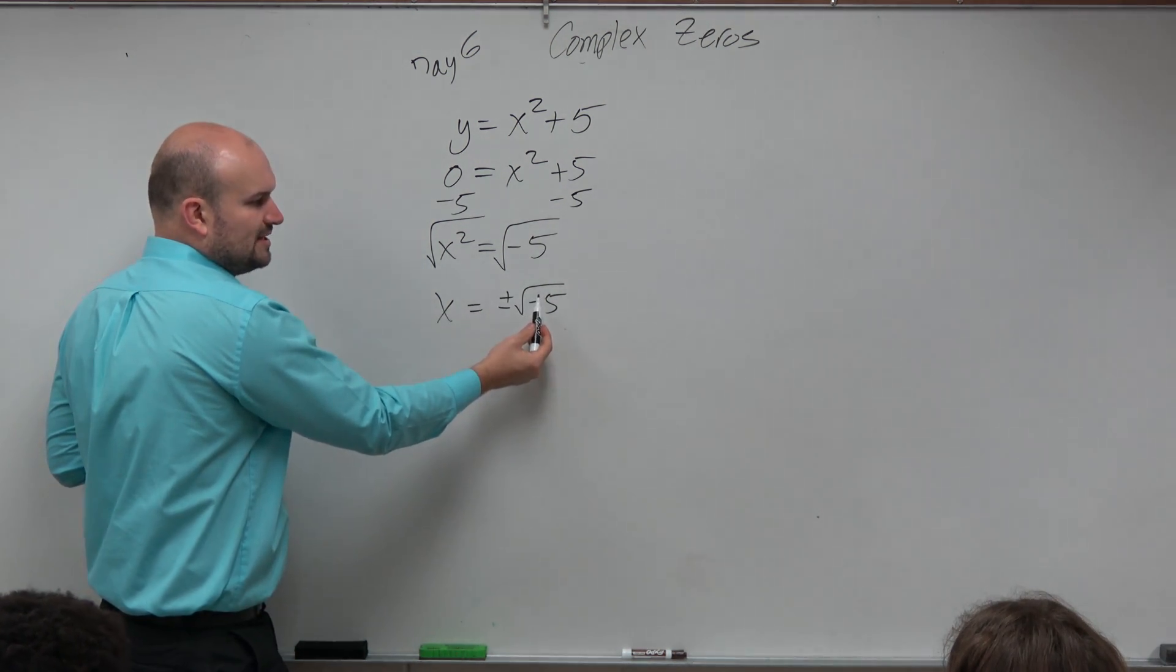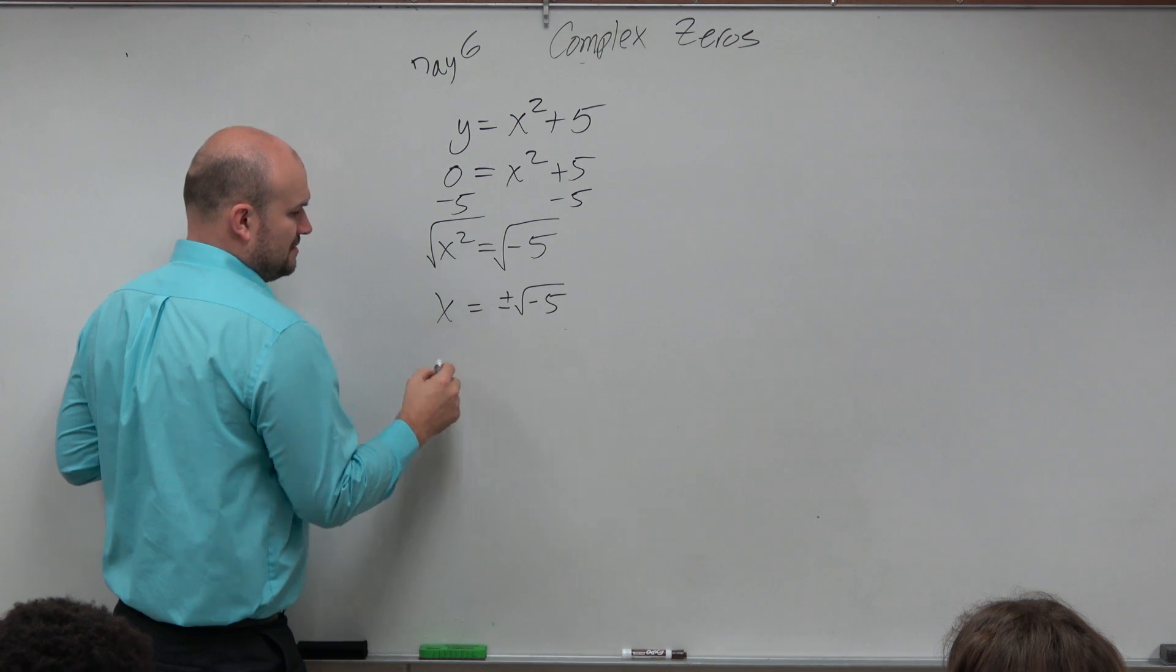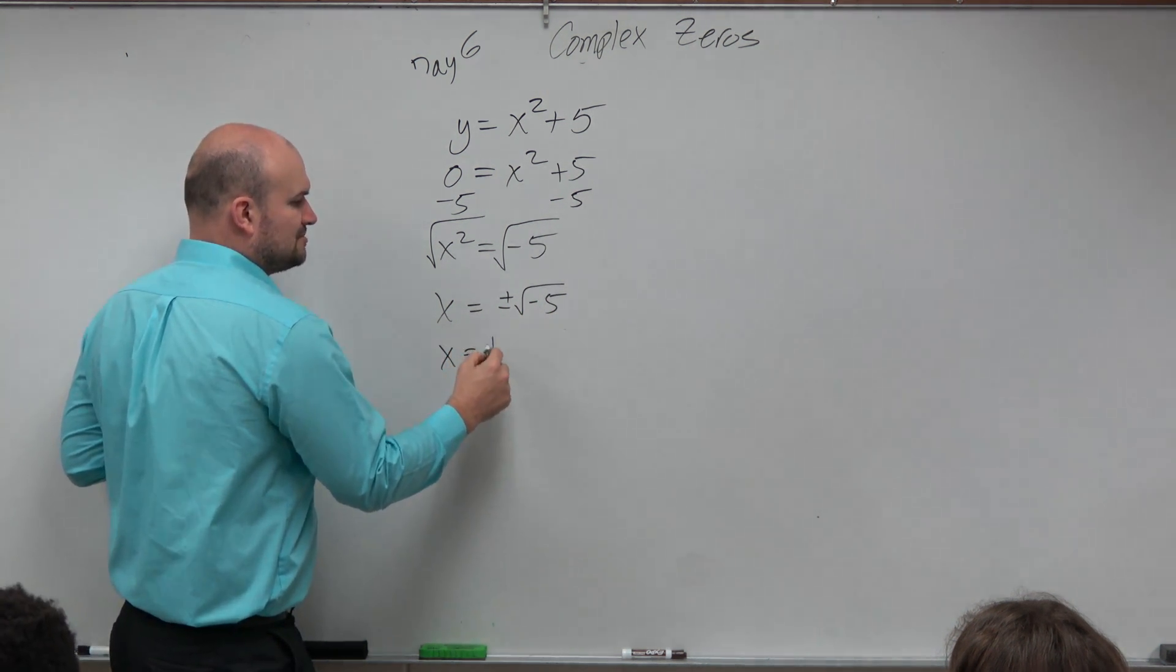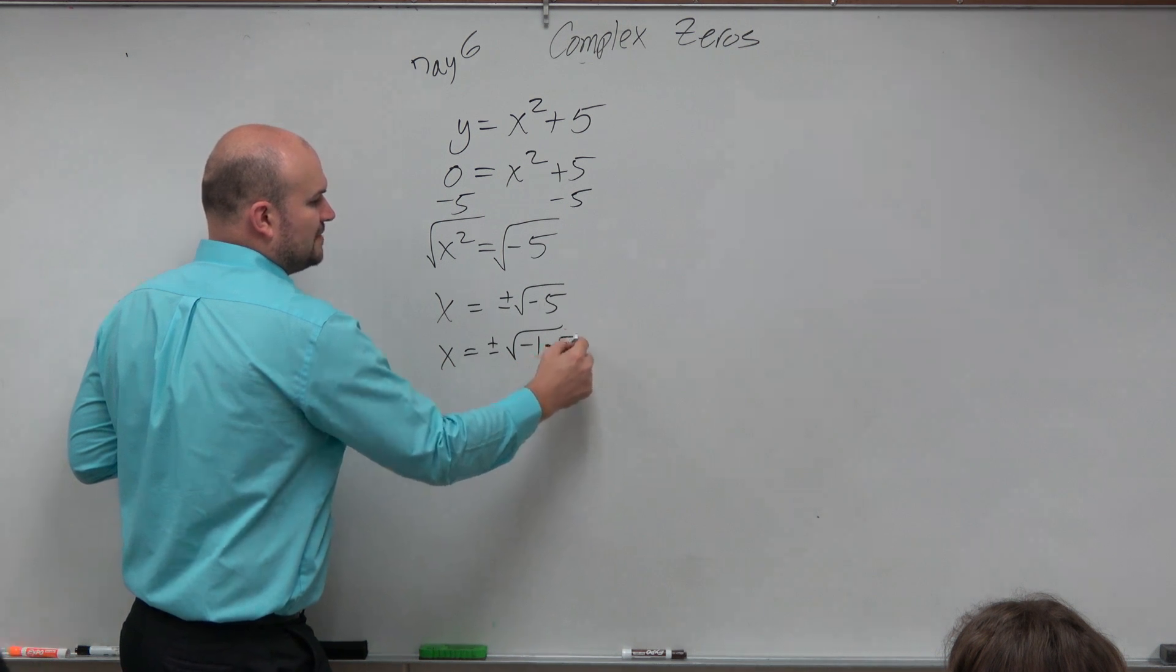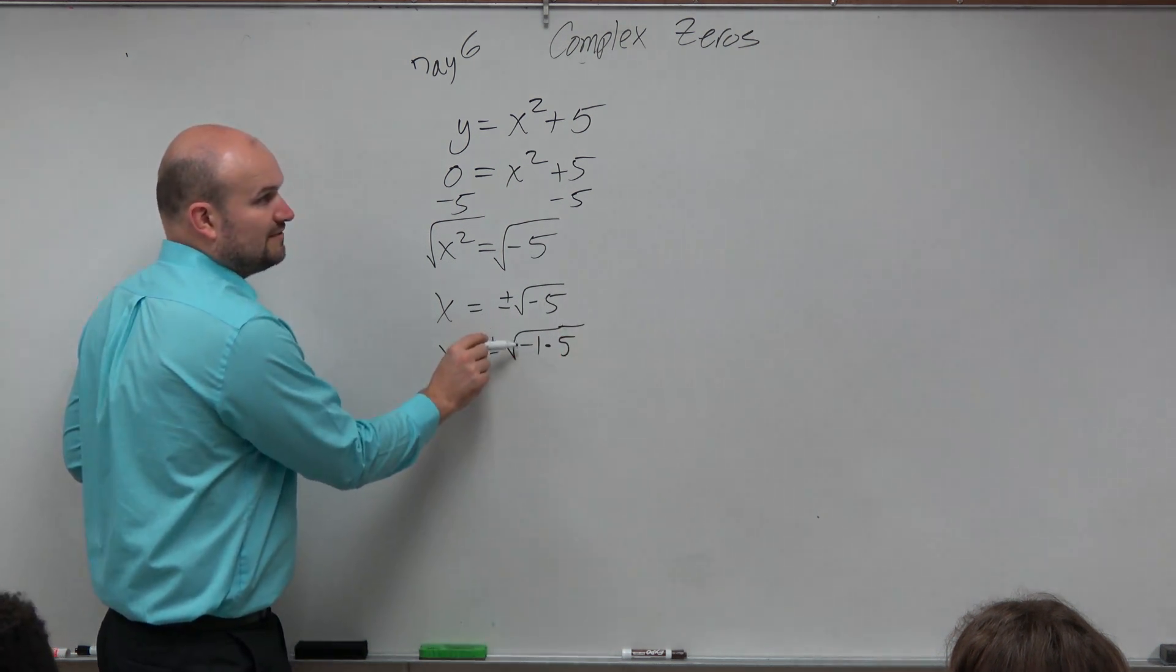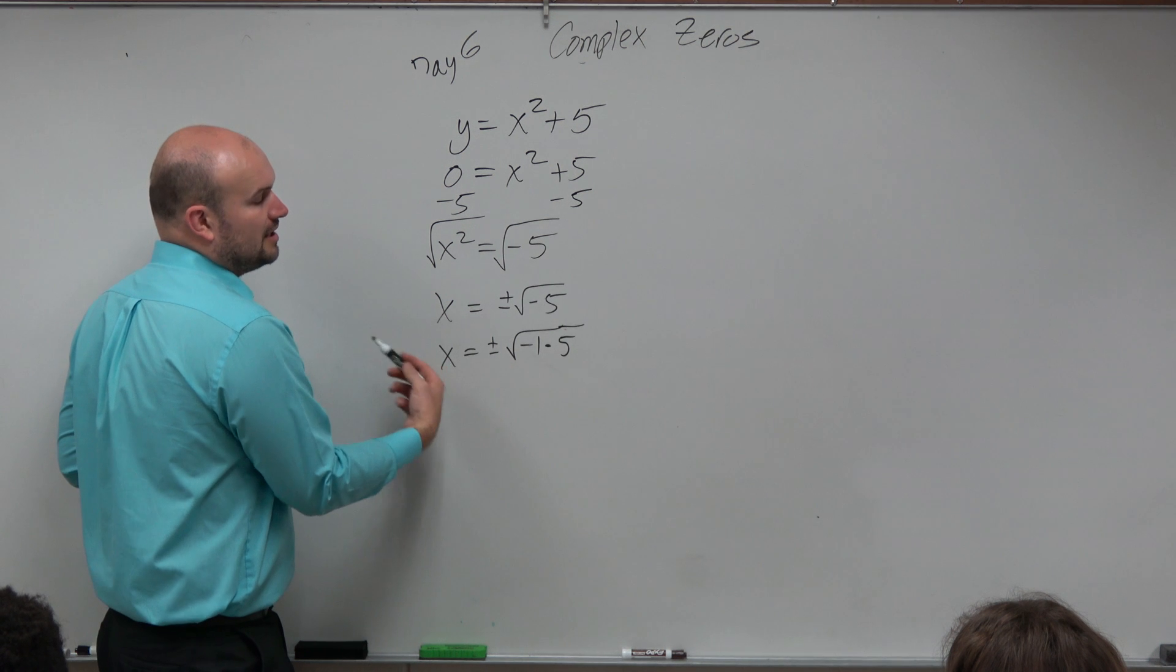We can break this down into x = ±√(-1 × 5). The square root of negative 1, if you remember from Algebra 2, when you're taking the square root of a negative number...